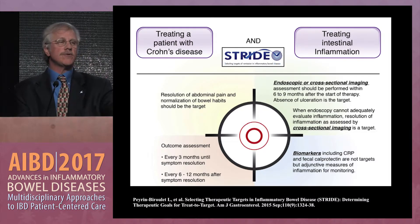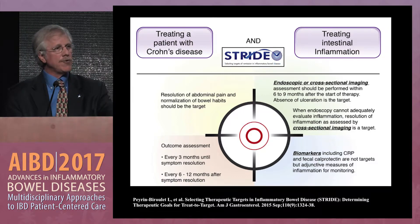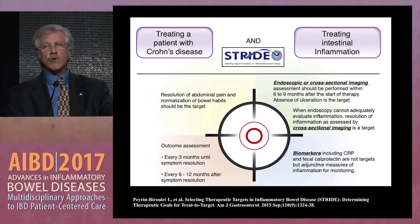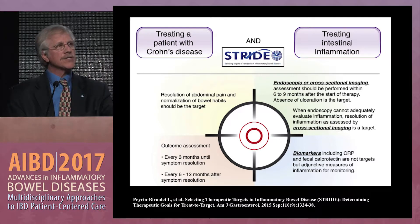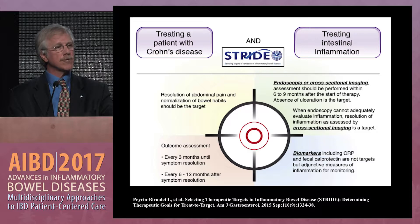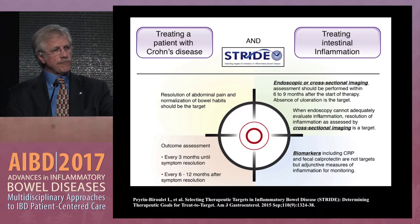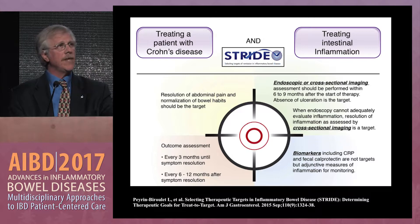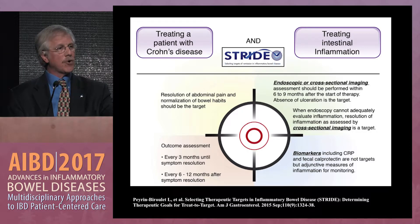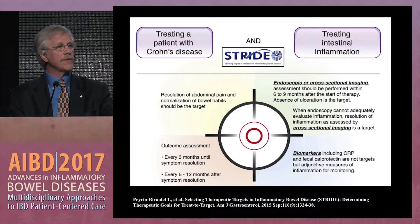When we see a patient with Crohn's disease in 2017, we want resolution of abdominal pain and normalization of bowel habits as our clinical target. We then want to treat intestinal inflammation with endoscopic or cross-sectional imaging depending on location, assessed at a later time because it takes longer for individuals with deep ulceration and transmural inflammation to respond. Biomarkers including CRP and fecal calprotectin were adjunctive measures in 2015, but with more data we're now using CRP as an appropriate biomarker. Once you achieve your target, you need to periodically reassess to make sure you're not losing it.